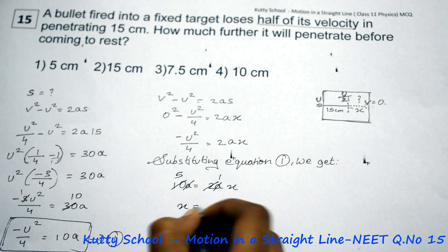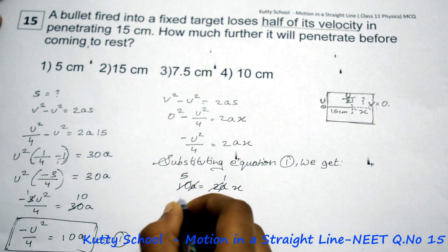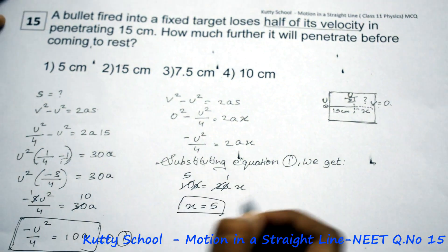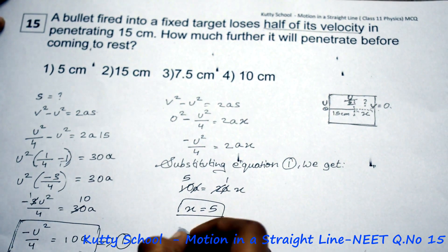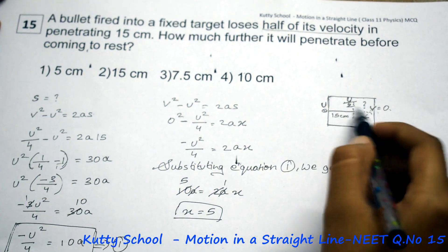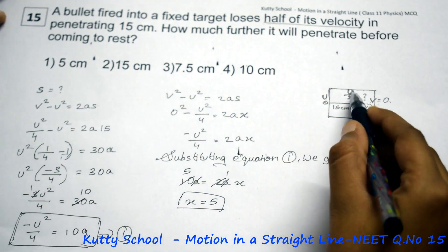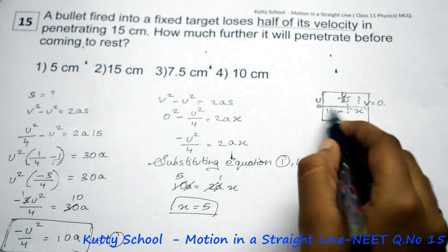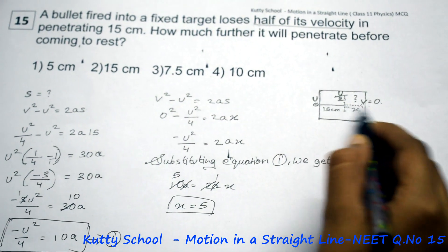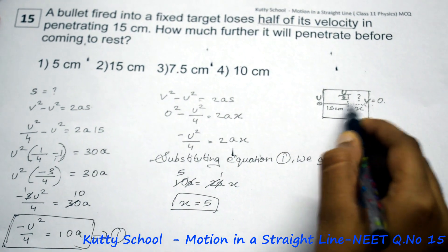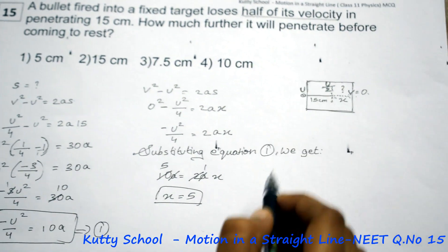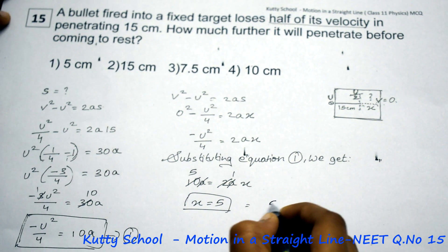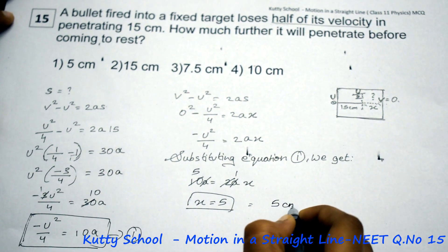Cancelling a from both sides: x is equal to 5. Therefore, the distance after 15 cm before coming to rest is equal to 5 cm.